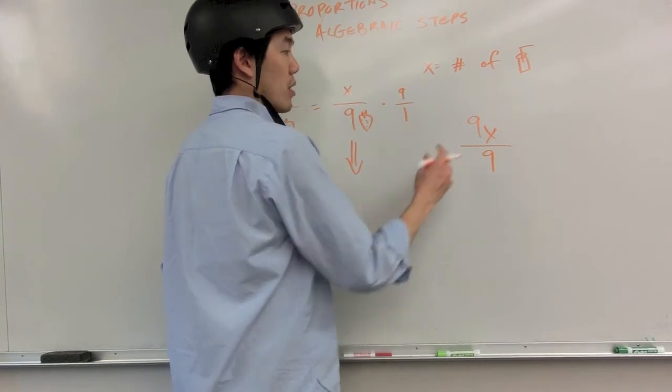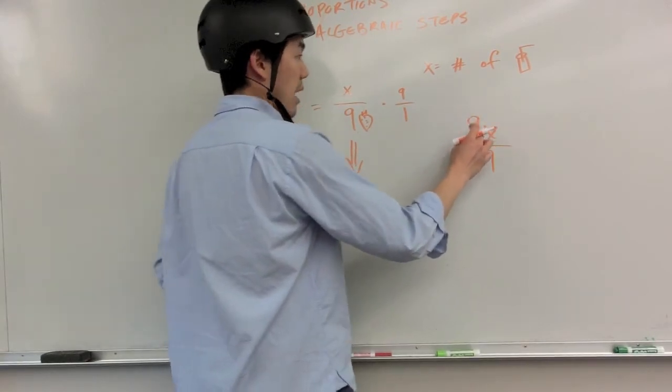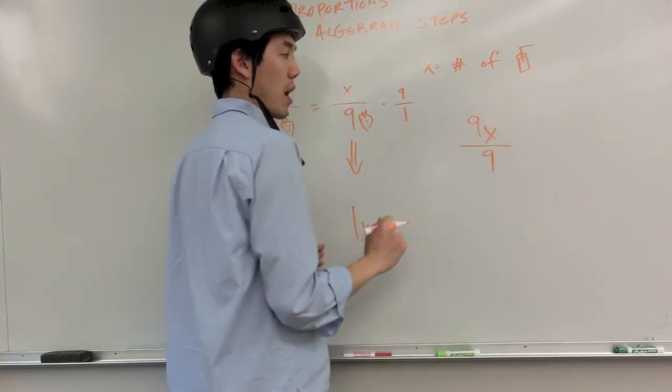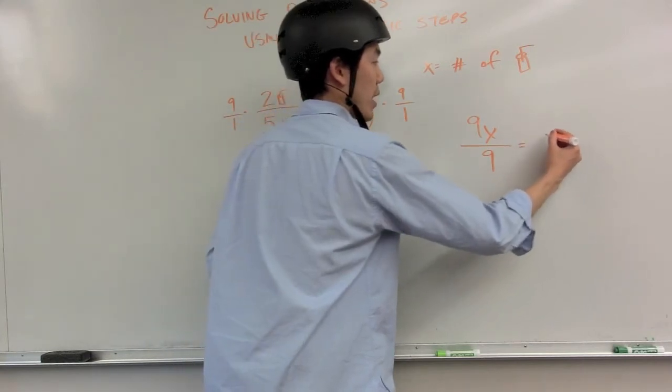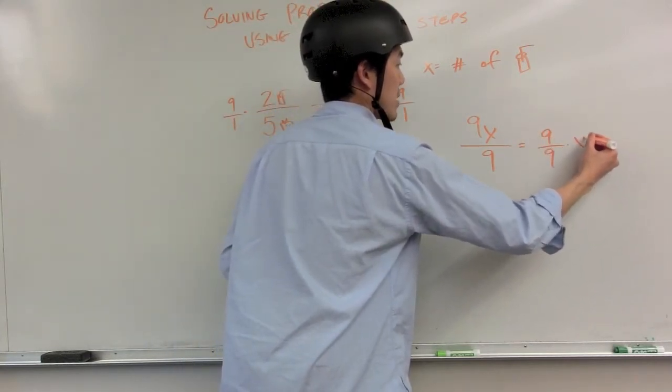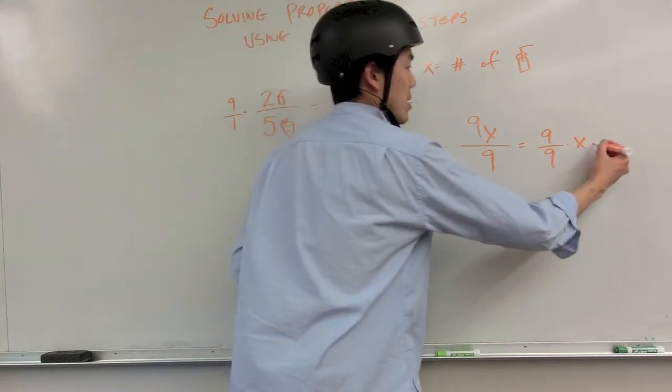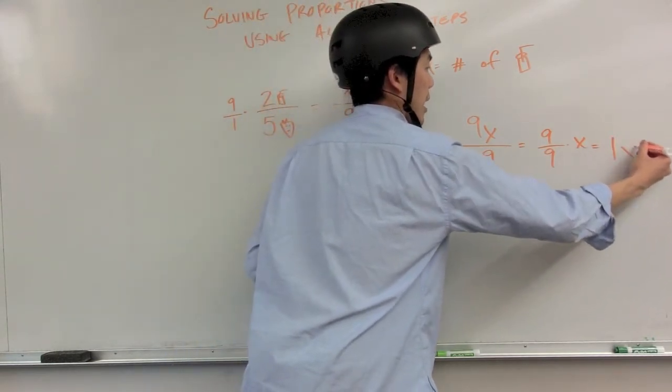And what you see here is nine times X over nine, which I think we could write the same as nine over nine times X, which is the same as one X.